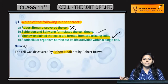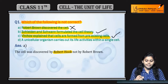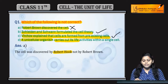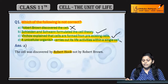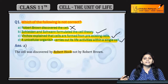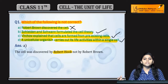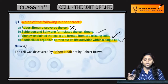Next one: a unicellular organism carries out its life activities within a single cell. This statement is also correct — unicellular cell means ek cell hai jo apne saare functions khud karta hai, sari activities wo khud karta hai.